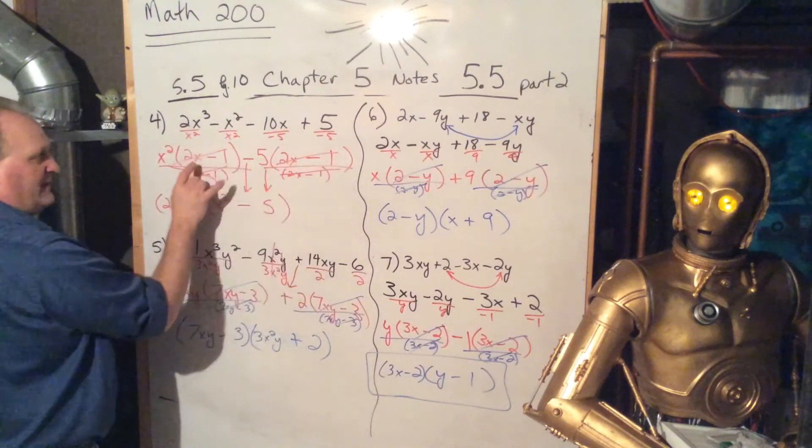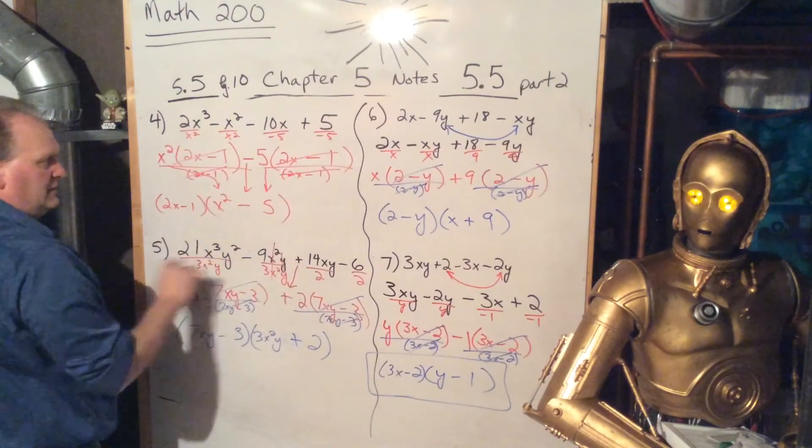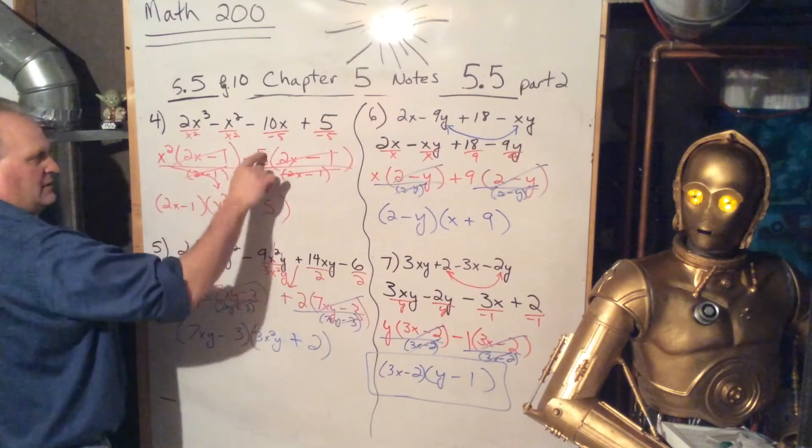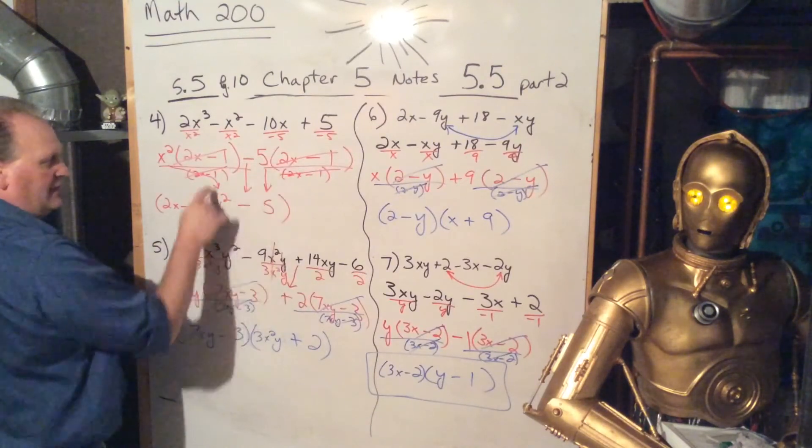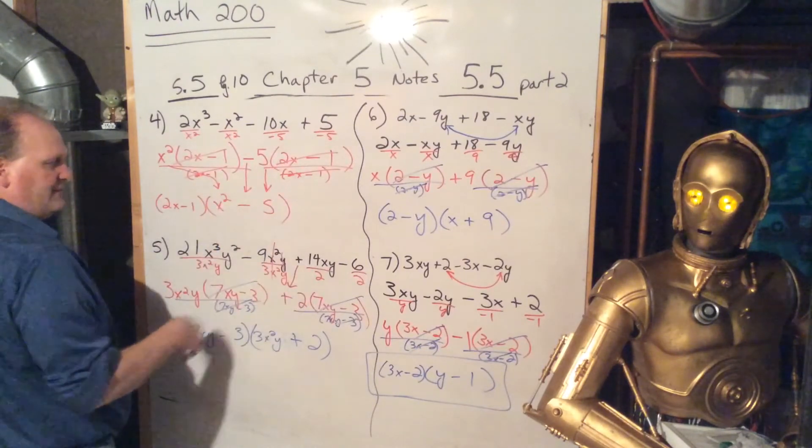Then, the greatest common factor is 2x minus 1, write it out front. And then I'm always left with what's in front, x squared minus 5, and then 2x minus 1 is cancelled. Alright, next one.